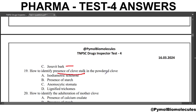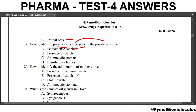Next question: how to identify the presence of clove stalk in powdered clove? Clove stalk is added as an adulterant in clove. The answer is isodiametric scleroids.